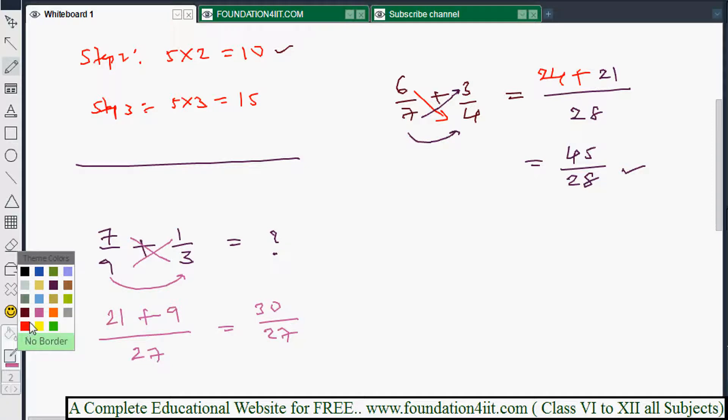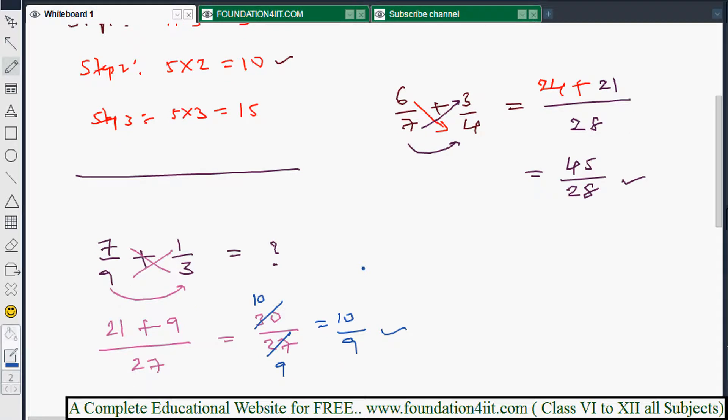You can simplify now: 21 plus 9 is 30 by 27. Now you can simplify the fraction - both you can cancel with 3 table, so 10 by 9 is final answer because always fractions you can write in simplest way.